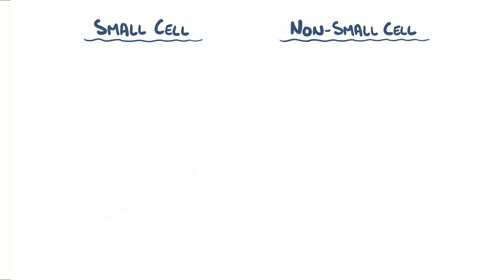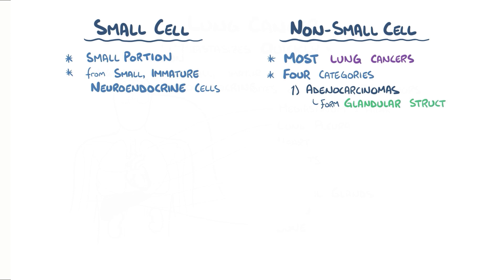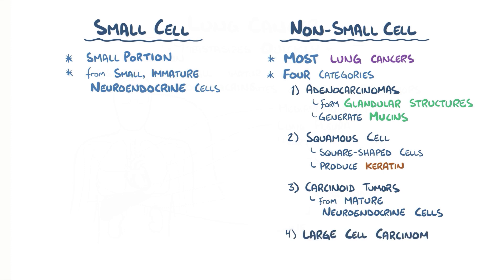Lung cancer can be categorized as either small cell or non-small cell carcinomas. Small cell carcinomas account for a small portion of lung cancers and originate from small, immature neuroendocrine cells. Non-small cell carcinomas account for most lung cancers, and can be further subdivided into four categories: adenocarcinomas, which frequently form glandular structures or generate mucin; squamous cell carcinomas, which have square-shaped cells that produce keratin; carcinoid tumors from mature neuroendocrine cells; and large cell carcinomas, which lack both glandular and squamous differentiation.